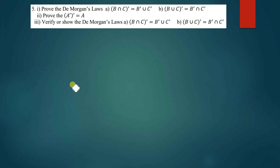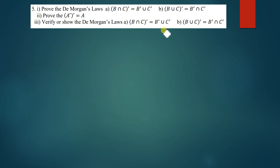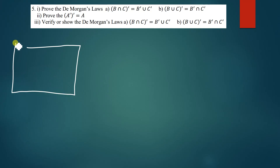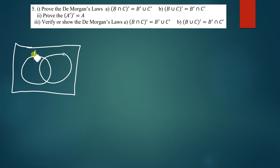The third part of this question says: verify the De Morgan laws. How is this different from the first part? The first part asked us to prove, and we have proved. For verification, I will use a sample set — I'll get two sets and work through a concrete example. So we have set B and set C.